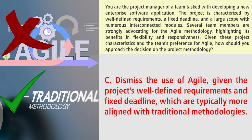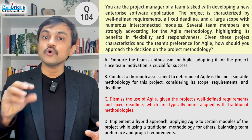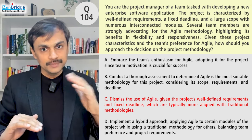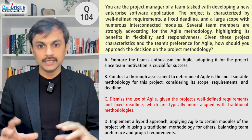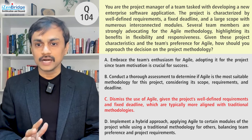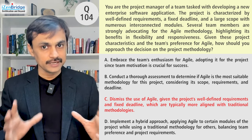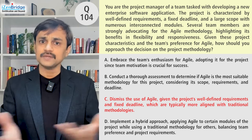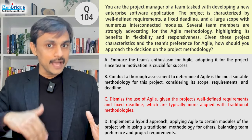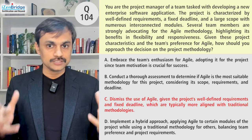Option C: Dismiss the use of Agile given the project's well-defined requirements and fixed deadline, which are typically more aligned with traditional methodology. However, team preference is also a factor, and in Option B I'm not saying I will or won't use Agile. There are elements clearly showing it could be a predictive lifecycle, but there's also team enthusiasm attached. Dismissing the team's recommendation directly may not be a good idea. I should conduct the assessment first, because the other parameters also need to be considered — acknowledge, analyze, then act.